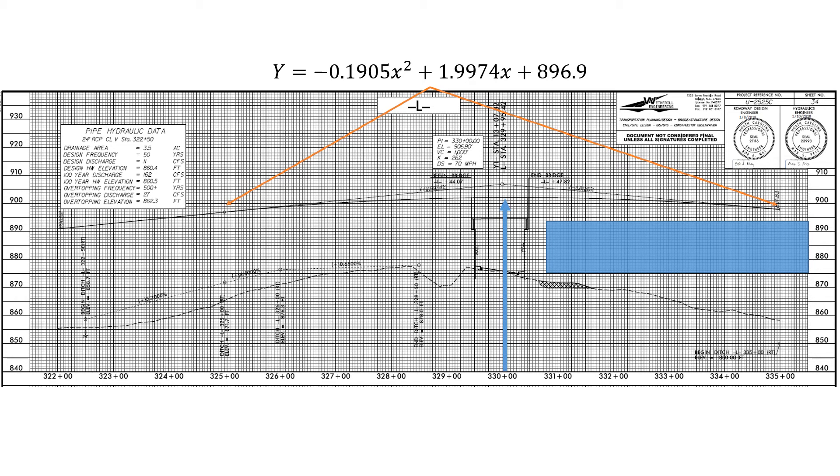We can also see this on the design plans where we see the high point. The station occurs at 330+24.25. We can't read that specificity on the design plan, but we can see where it occurs and the elevation of 902.13 feet.